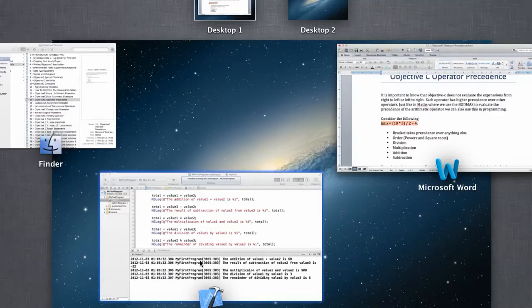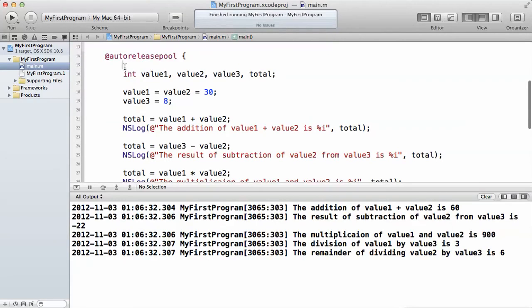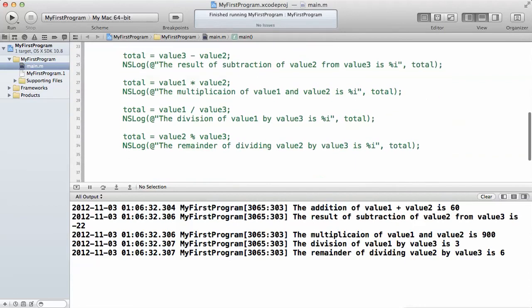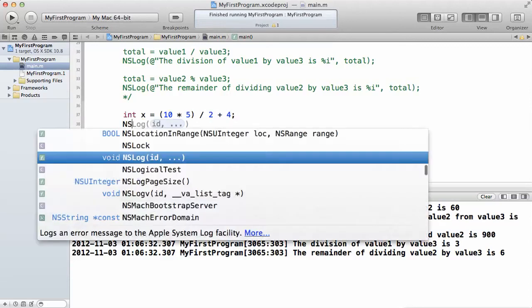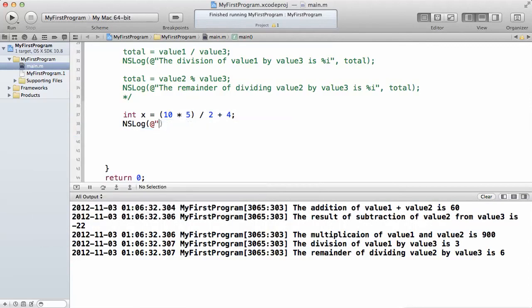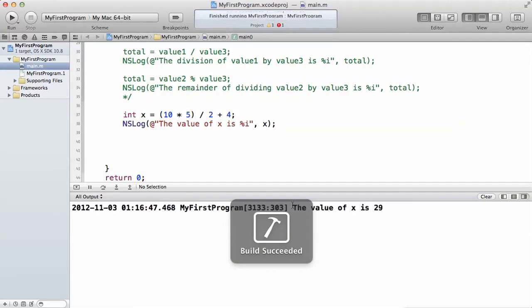So what we do now is I'm actually going to comment out all this code and then confirm that we got it right. So what I do is I'll paste that and say NSLog. The value of x is percentage i. x.